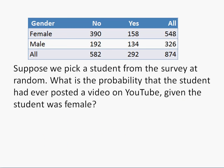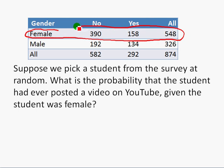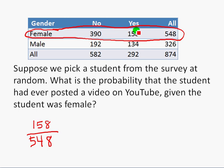Similar question: we pick a student at random and find the probability that the student had posted a video on YouTube, given that the student was female. We're dealing with only the row of females — 548 female students. Out of those 548 who are female, 158 had posted on YouTube. So 158 out of 548, written as a decimal, gives 0.2883.